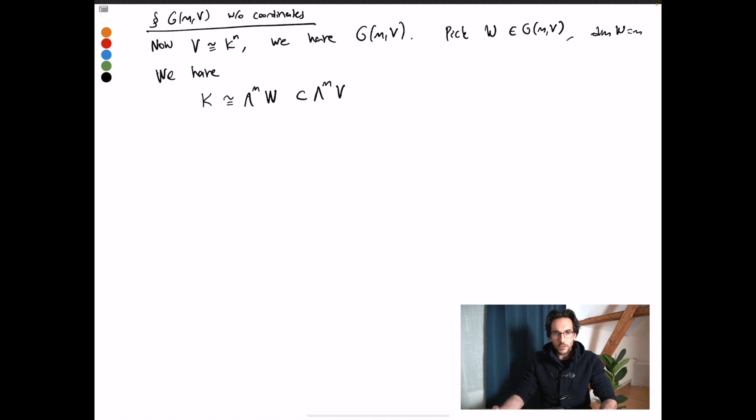The key observation here is that the mth wedge product of an m-dimensional space is one-dimensional. You can choose a basis for W, let's say v_1 through v_m, and v_1 wedge v_2 wedge v_3, et cetera, up to v_m, will give you a basis for this line.